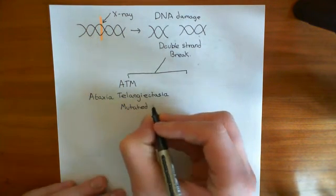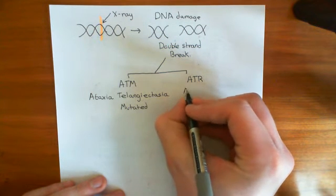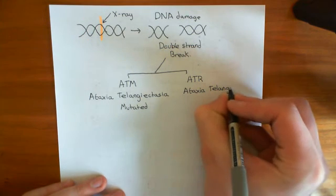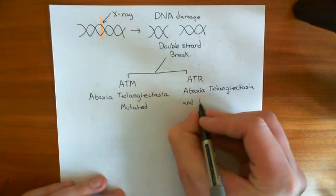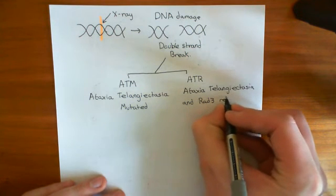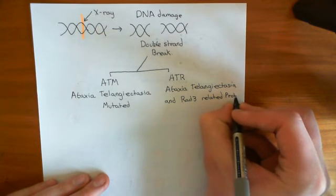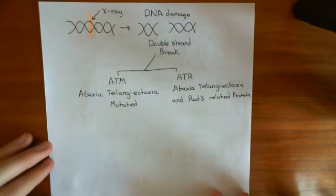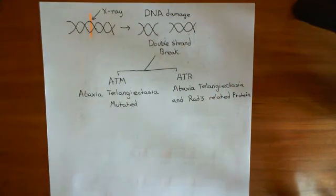And the other one is called ATR, and again this is named after ataxia telangiectasia. So it's ataxia telangiectasia and Rad3 related protein - not related peptide, sorry, related protein. So what do these two proteins do? Well basically, when the DNA is damaged, they become activated. They sense the DNA damage and become activated. And what they are - both of these proteins are examples of serine-threonine kinases.